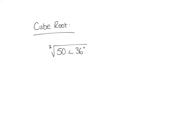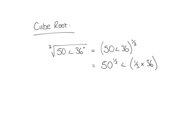Now let's calculate the cube root of a number. Our polar form value is 50 at an angle of 36 degrees, and we want the cube root. That's the same as 50 at an angle of 36 to the power 1 over 3. Applying De Moivre's theorem, that's 50 to the power of one third at an angle of one third times 36. The cube root of 50 is 3.684 to 3 decimal places, at an angle of one third times 36, which is 12 degrees.